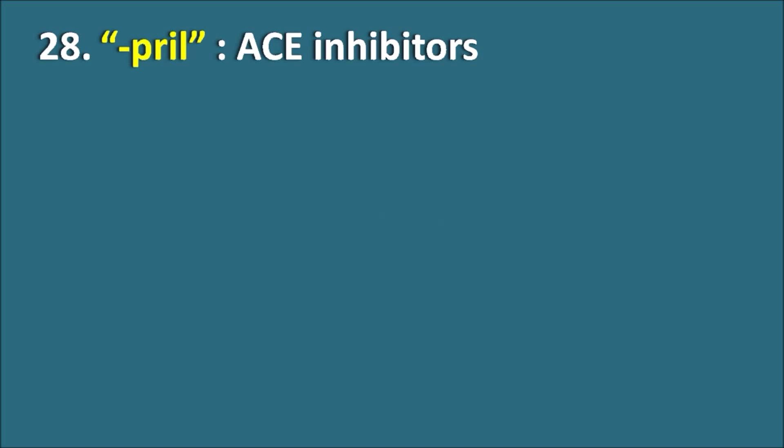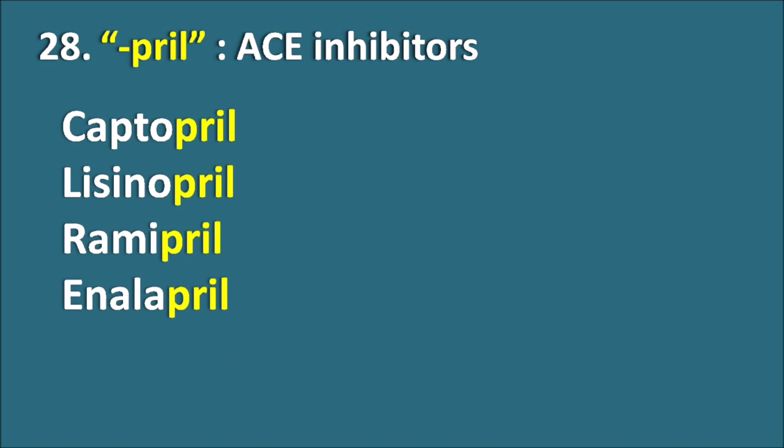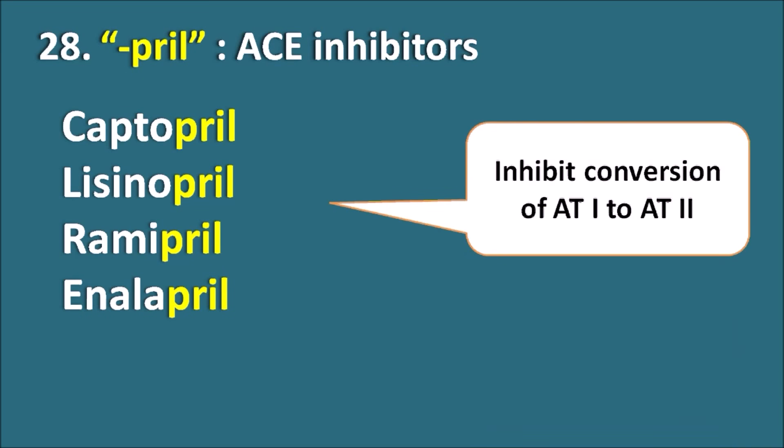Twenty-eighth, the suffix '-pril' indicates ACE inhibitors. As seen at the start of this video, ACE inhibitors share the common suffix '-pril'. Drugs like Captopril, Lisinopril, Ramipril, and Enalapril are ACE inhibitors. These drugs inhibit the conversion of angiotensin 1 to angiotensin 2, thereby being used as antihypertensives.